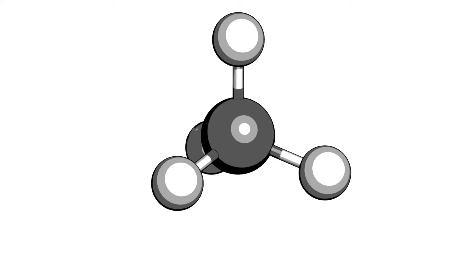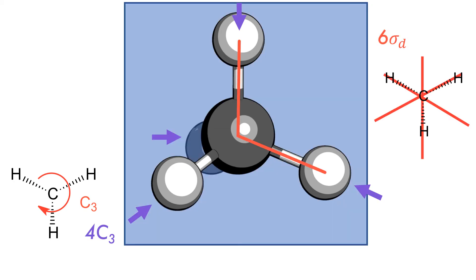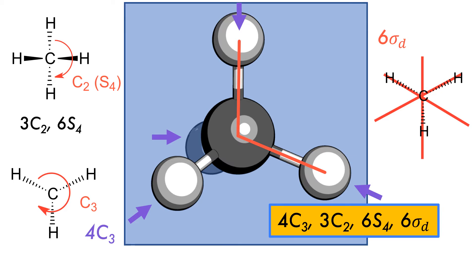Let's take a closer look at some of the symmetry operations of a molecule, in this case methane. There are four C3 axes and six mirror planes along axes containing two CH bonds. There are also three C2 axes and six improper rotation or S4 axes. Together these symmetry operations make a group that we call a point group.